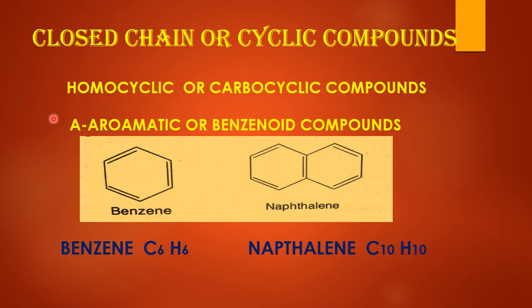Number one: aromatic or benzenoid rings. These compounds contain a benzene or benzenoid ring within their structure. One or more than one benzene ring consists of six carbon atoms and six hydrogen atoms with three alternate double bonds.